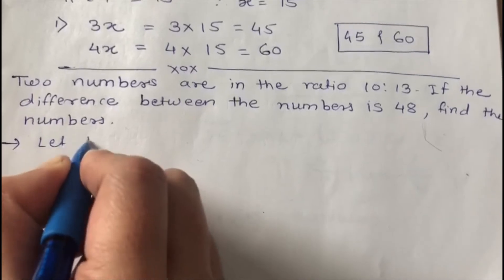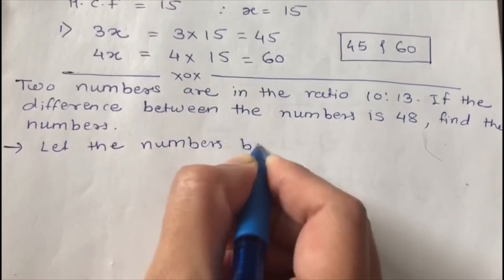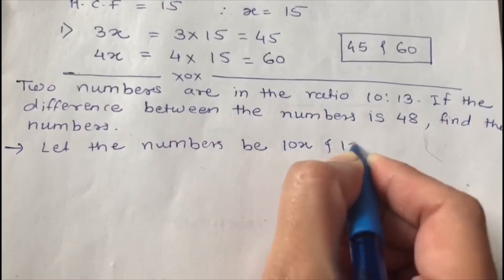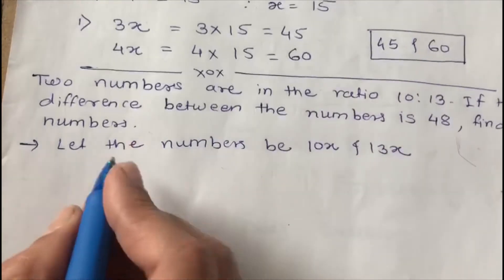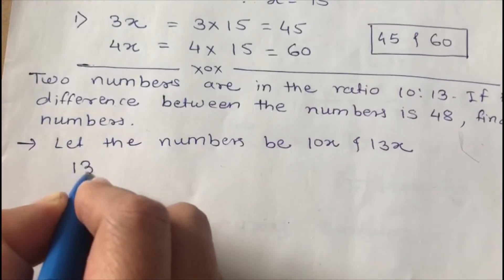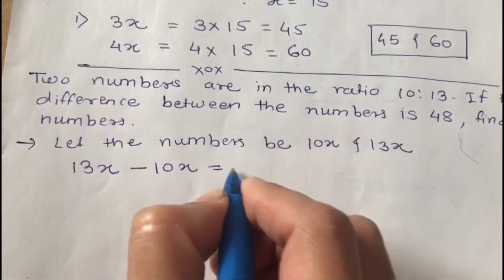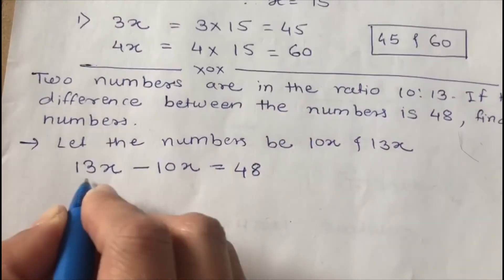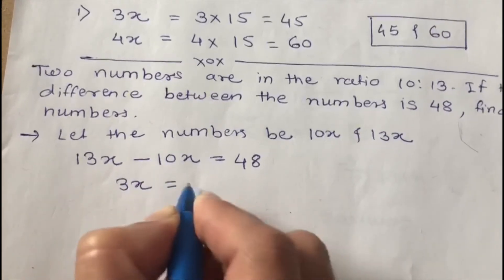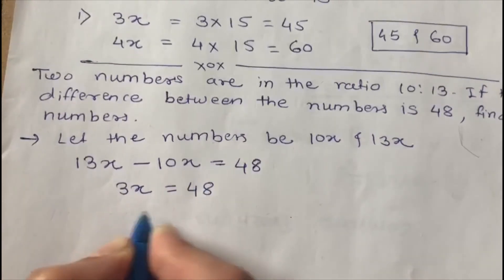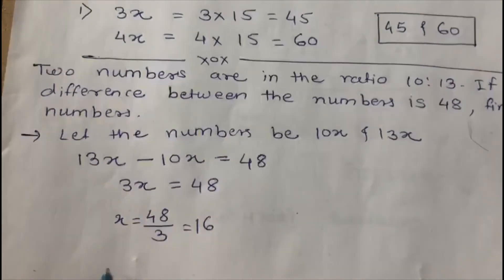So let the numbers be 10x and 13x. And the difference between the two numbers is 48, that means 13x minus 10x equals 48. So 13x minus 10x means 3x equals 48. When we divide 48 by 3, it gives us 16.